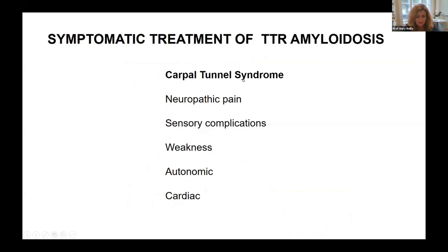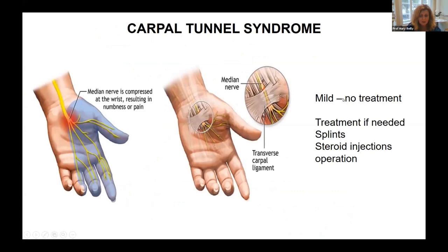As well as definitive treatments, there are many symptomatic treatments for neuropathy. Going back to carpal tunnel syndrome — many patients have mild symptoms and don't need specific treatment. The symptom most likely to respond to treatment is what we call positive sensory symptoms: pain and tingling during the night, first thing in the morning, or repeatedly during the day. If treatment is needed, some people respond to splints at night, others need steroid injections, and many have an operation to cut the ligament — which is very successful for positive sensory symptoms.